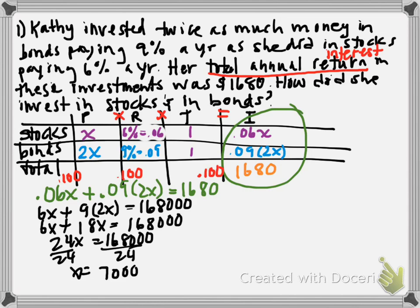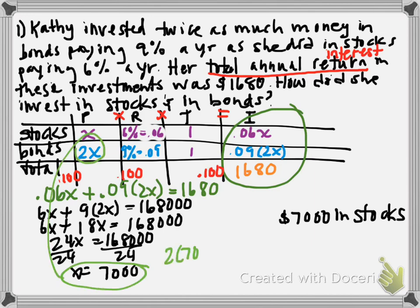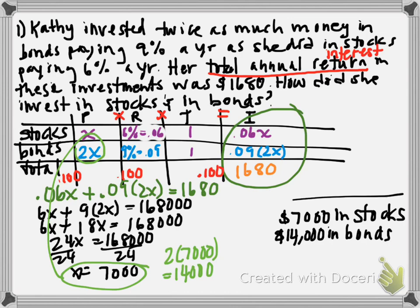X equals 7,000. X represents stocks, so we say $7,000 in stocks, or you could say stocks equals $7,000. To figure out bonds, we plug into the equation. We get 2 times 7,000 equals 14,000. So we have $14,000 in bonds. That's answer one.